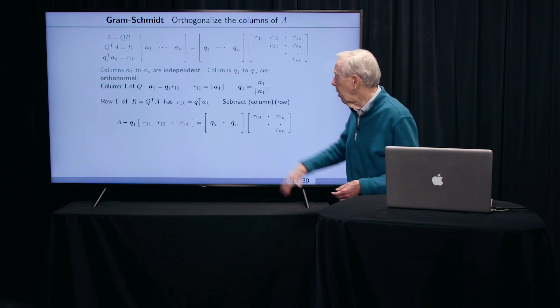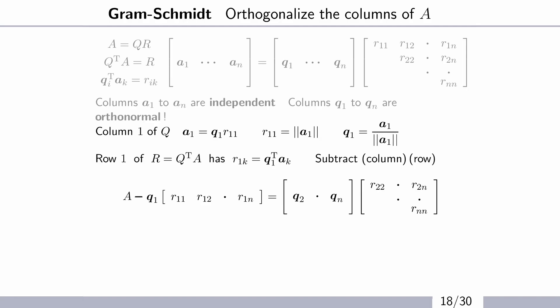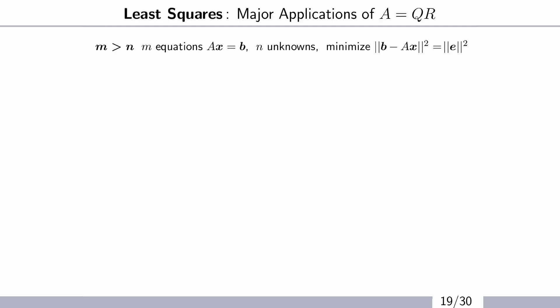So A equal QR is one of the fundamental steps of linear algebra and computational linear algebra. Very, very often we're given a matrix A, we want a nice matrix Q, so we do this Gram-Schmidt step to make the columns orthogonal. And here's the first step of Gram-Schmidt, but you need practice to see all the steps.